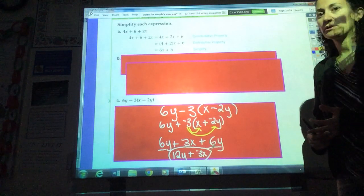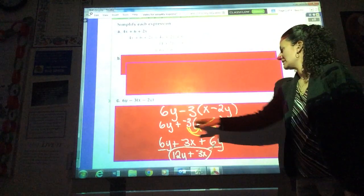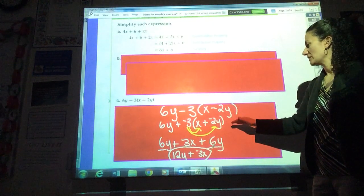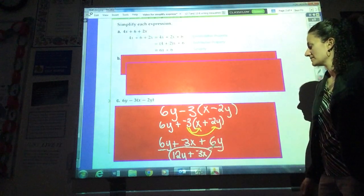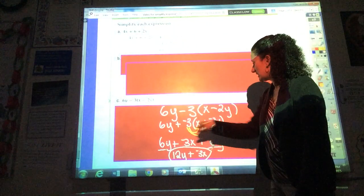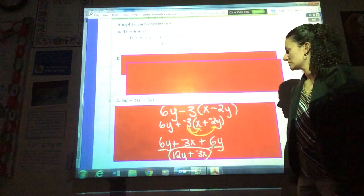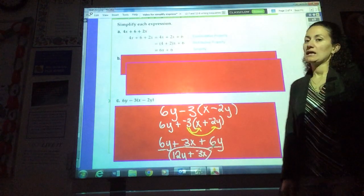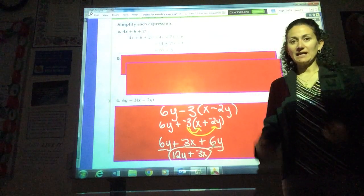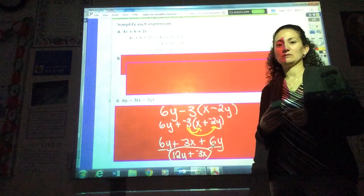So to summarize what I did, I first change any subtraction into addition. I rewrote the expression with only addition signs. The second step, look for any distributive property. If you've got parentheses with a number outside of it, then you'd better rewrite that using the distributive property. And then step 3, combine any like terms or constants, and you should have your answer in simplest form.